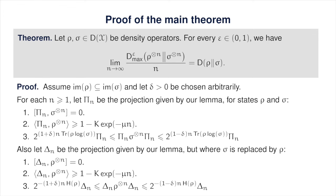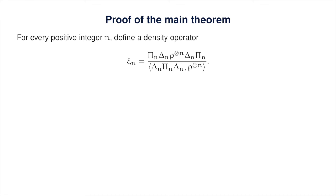To prove that the regularized smooth max relative entropy is upper bounded by the ordinary quantum relative entropy, we need to show that smoothing makes the max relative entropy small enough. The natural approach is to find a state close to rho tensor n that has small max relative entropy with respect to sigma tensor n. The state we choose for each n is psi sub n: we conjugate rho tensor n with the projection delta sub n, then conjugate again by pi sub n, and normalize the resulting operator. This is an example where we could have saved a little trouble by allowing smoothing to sub-normalized states rather than forcing normalization, but it isn't a major complication.